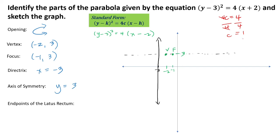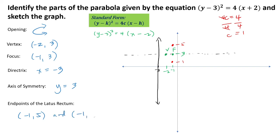For the endpoints of the latus rectum, we refer to our 4c value of 4, divided by 2, giving us 2. We would have 2 units north of our focus and 2 units south of our focus. That gives us one endpoint at negative 1, 5, and another endpoint at negative 1, 1.